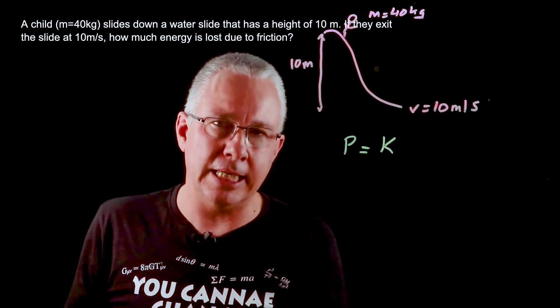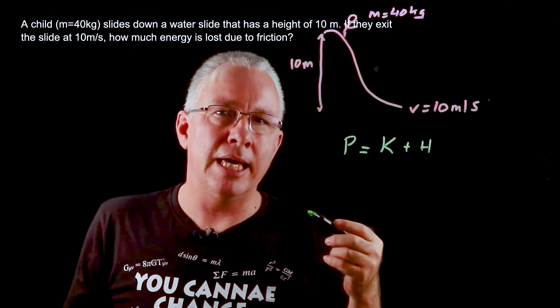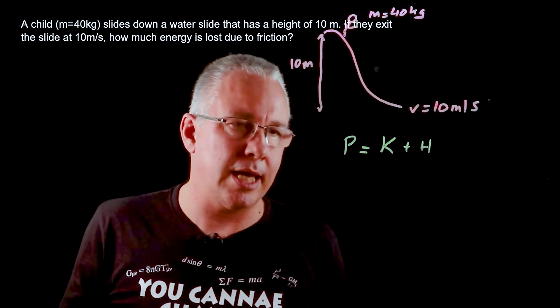The first one is of course the kinetic energy which is related to the velocity of the child plus H which is the energy in terms of the heat loss from the friction and so forth. So this is equal to that.